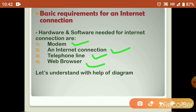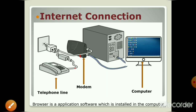Let's understand with the help of a diagram. See this diagram given here. Three devices are given: telephone line, modem, and computer, and also shown the connection between them. Modem is a device that connects your computer with the telephone line. As you see in the diagram, modem is connected with telephone line and also with the CPU, meaning computer. Modem is one type of intermediator between computer and telephone line. It changes the computer signals so that they can travel through telephone lines and vice versa.